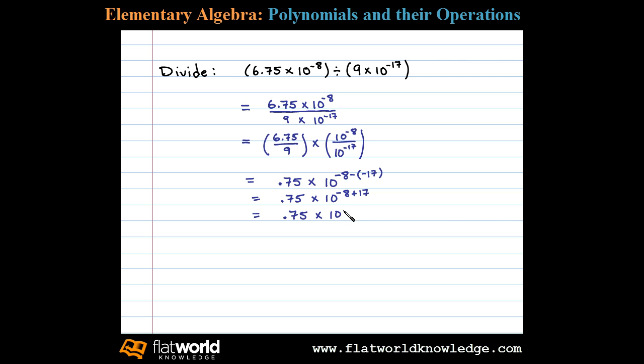You know this number is not in proper scientific notation because the numerical part is less than 1. The numerical part, remember, has to be between 1 and 10, so we can write this as 7.5 times 10 to the minus 1 power.